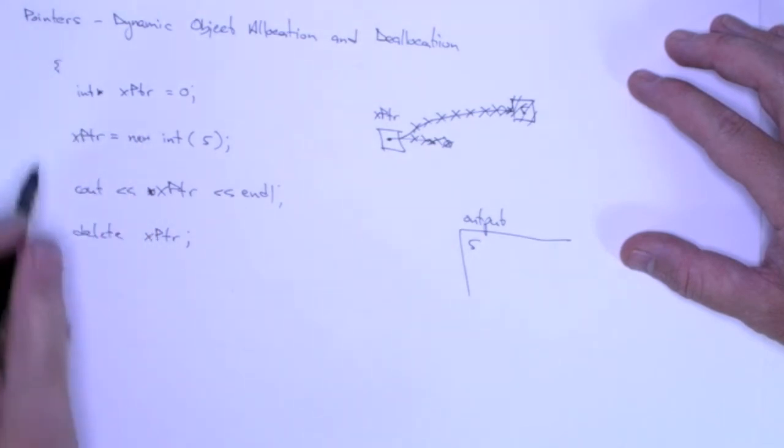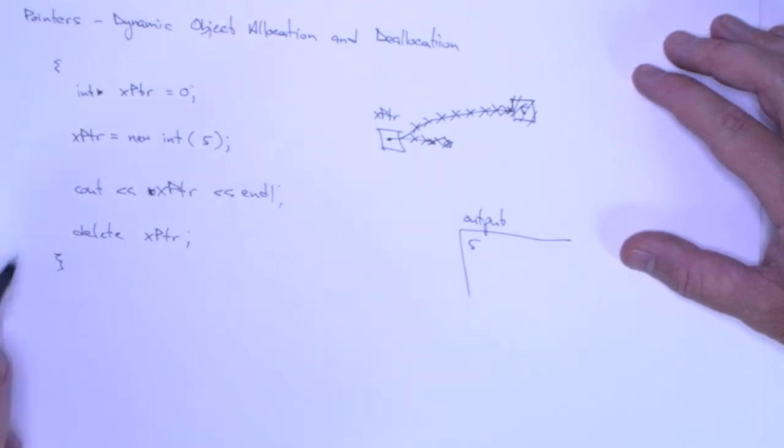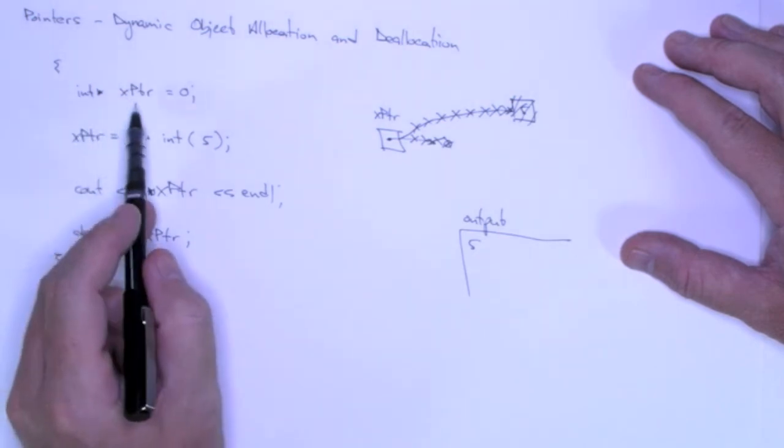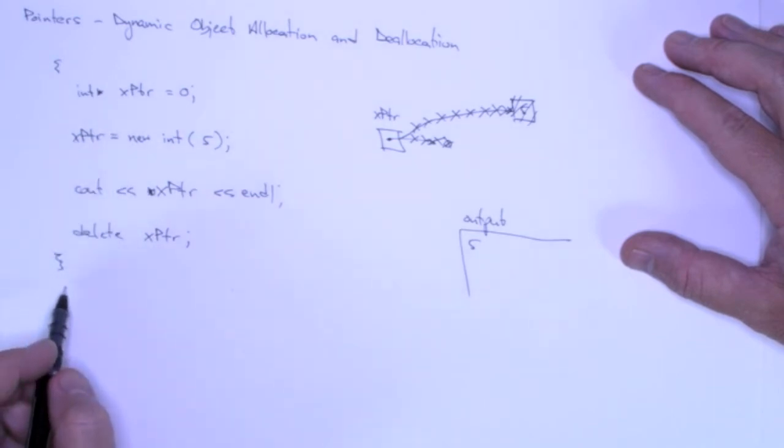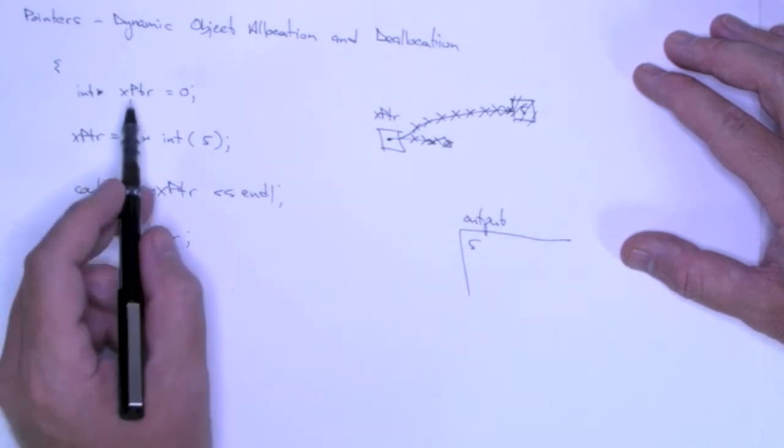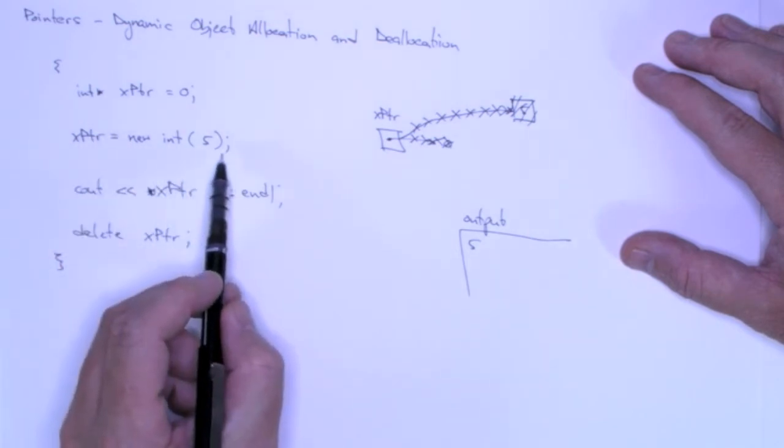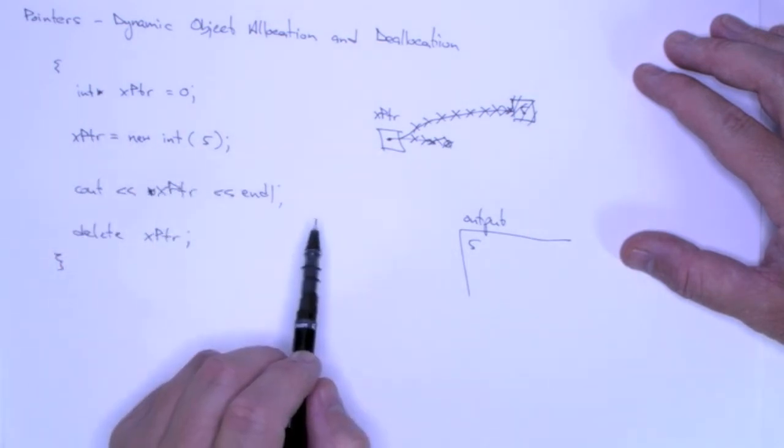This code fragment will be in some scope. It will be in a for loop, or it will be in a method block, or something like that. But when we leave the scope in which we declared this pointer, then it will be deallocated. So x pointer is statically allocated, the integer 5 is dynamically allocated.